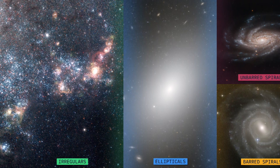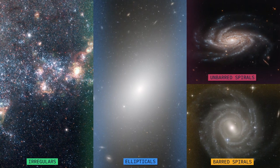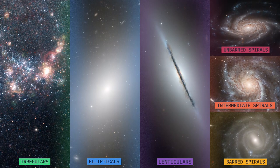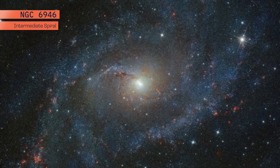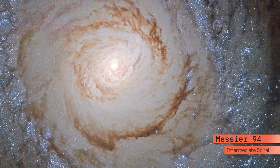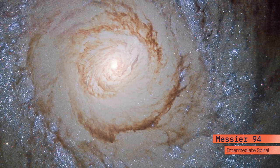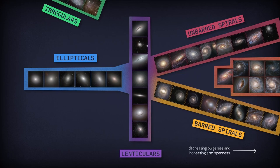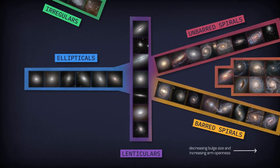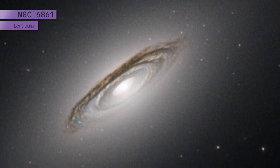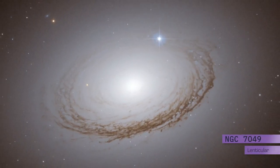Astronomers have expanded Edwin Hubble's basic tuning fork diagram to include galaxies that fall between his three categories. Intermediate spiral galaxies sit between unbarred and barred spirals, and have a small bar. Lenticular galaxies sit between elliptical galaxies and spirals. They have a central bulge of stars and a flattened disk, but no spiral arms.